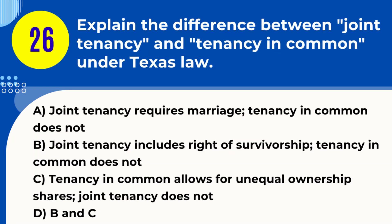Question 26. Explain the difference between joint tenancy and tenancy in common under Texas law. A. Joint tenancy requires marriage; tenancy in common does not. B. Joint tenancy includes right of survivorship; tenancy in common does not. C. Tenancy in common allows for unequal ownership shares; joint tenancy does not. D. B and C. Answer: D. B and C. Explanation: Under Texas law, joint tenancy includes the right of survivorship and requires equal ownership, while tenancy in common does not include survivorship rights and allows for unequal ownership shares.